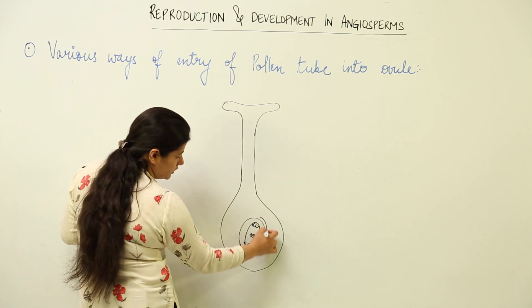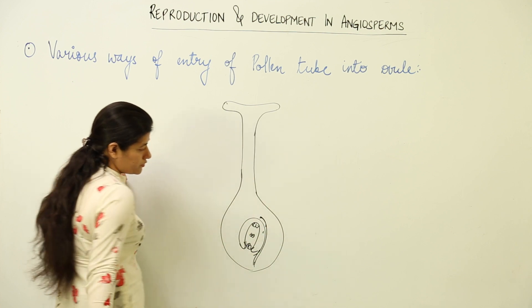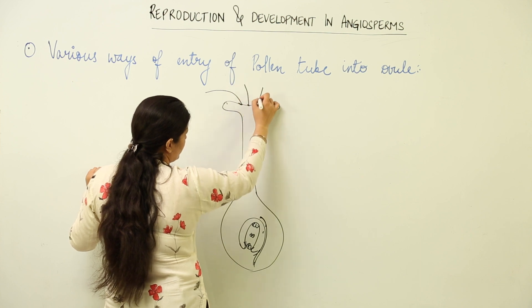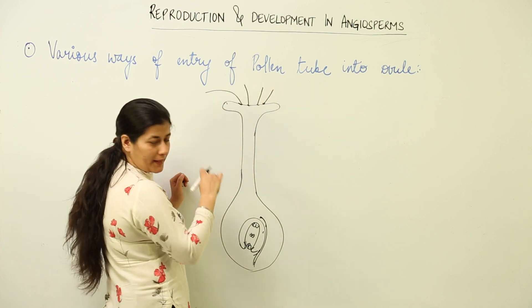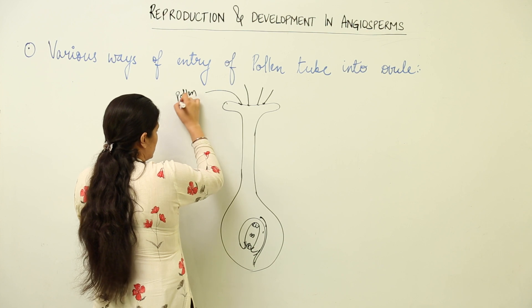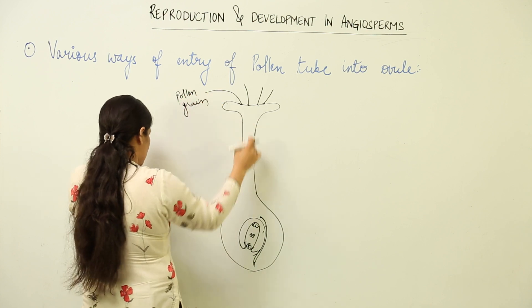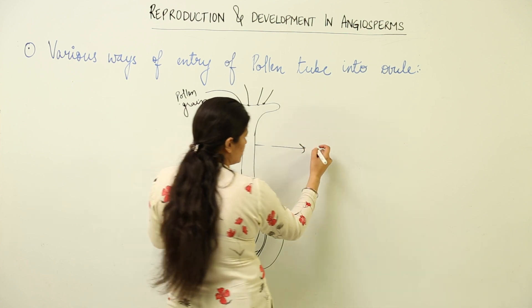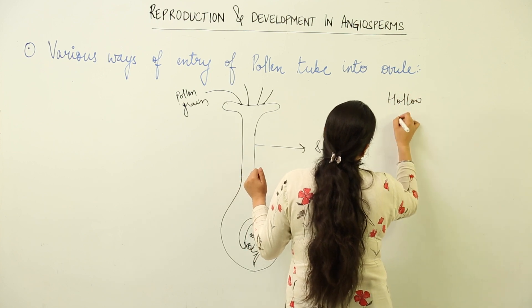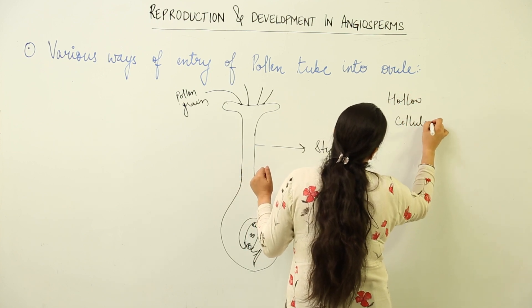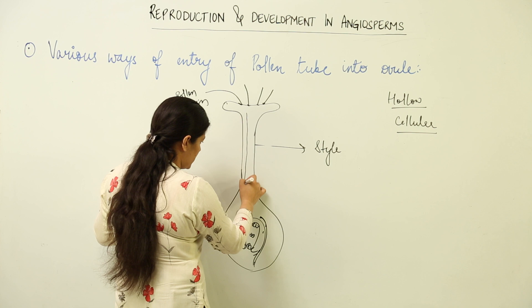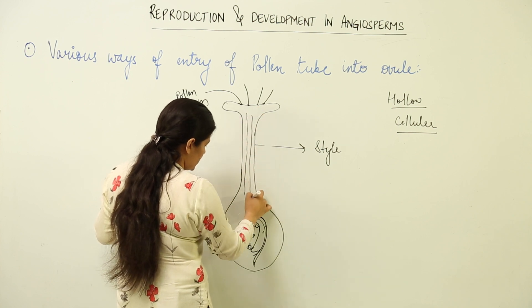This is what we have to see. The pollen grains come and fall on the receptive stigma. As soon as the stigma senses that pollen grains have fallen on it, there are two possibilities. The style through which the pollen tube is to be formed could be hollow or it could be cellular.